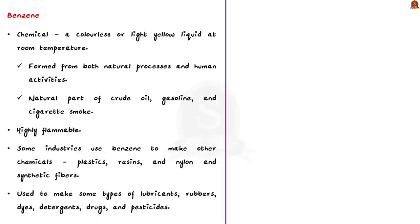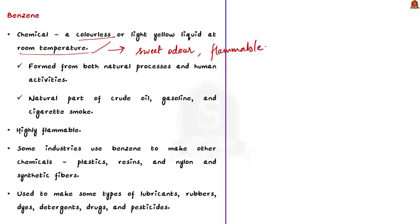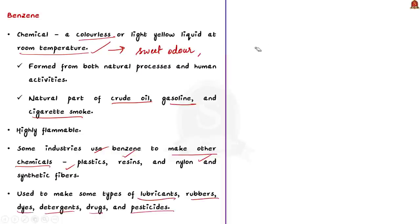Benzene is a colorless or light yellow liquid at room temperature with a sweet odor and is highly flammable. It is formed from both natural processes and human activities, and is a natural part of crude oil, gasoline, and cigarette smoke. Some industries use benzene to make other chemicals used to produce plastics, resins, nylons, and synthetic fibers. Benzene is also used to make lubricants, rubbers, dyes, detergents, drugs, and pesticides.